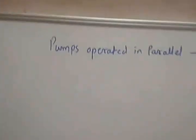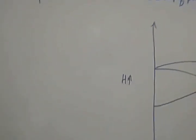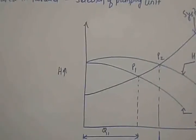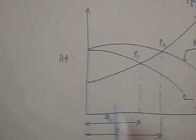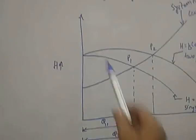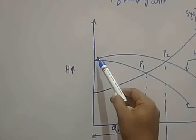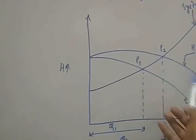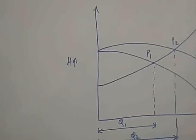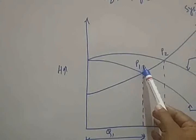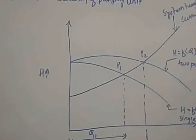Now we will see the selection of a pumping unit when the pumps are in parallel. As with pumps in series, we will be plotting the system head curve, then the H versus Q plot for a single pump, and also the H versus Q plot for the sum of discharges of two pumps versus head. Then we can see the point of intersection for a single pump and the point of intersection for two pumps.